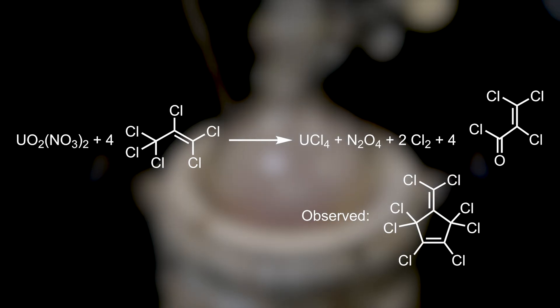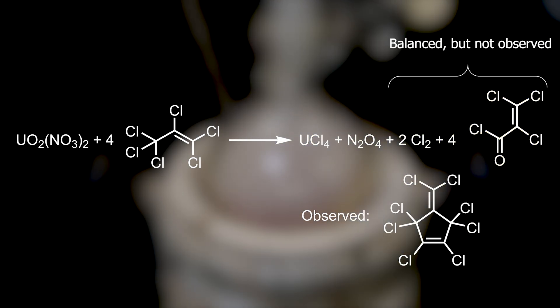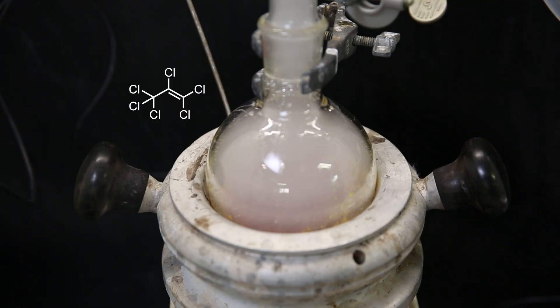In the reaction, theoretically it is said that uranyl nitrate reacts with hexachloropropene to form uranium tetrachloride, dinitrogen tetroxide, chlorine, and 2,3,3-trichloroacryloyl chloride, which forms a balanced equation. But in a study, the main product resulting from the hexachloropropene that is observed in this reaction is 2,5-dichlorohexafluoro-2,4-hexadiene, and also no chlorine was noted. So the original equation is balanced but does not reflect reality, and it is not fully known what all the products are. But with the observed product to balance the equation, it would require adding oxygen as one of the products, which is not mentioned anywhere. The use of a chlorinated alkene for a chlorination is quite unique and not something I've seen before.